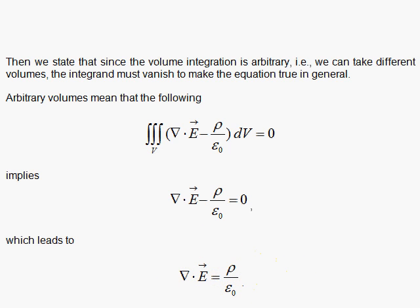The result: del dot E vector is rho over epsilon sub-naught. That's our first Maxwell equation in differential form. That's Gauss's law, and that's Coulomb's law in still another form.